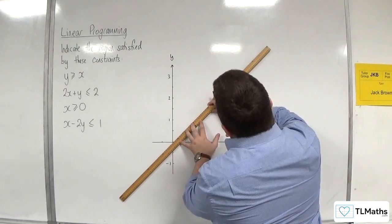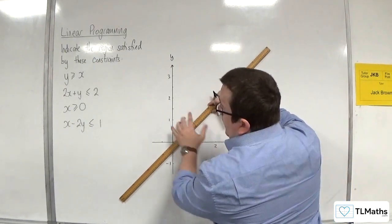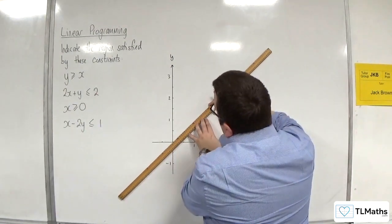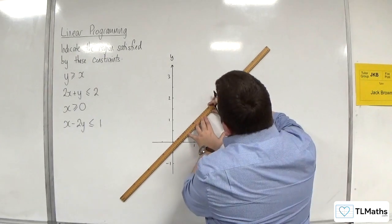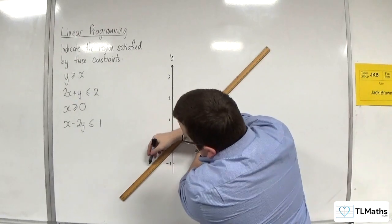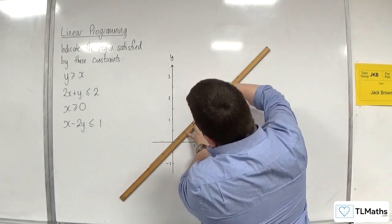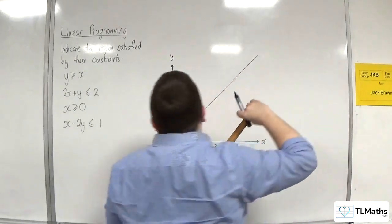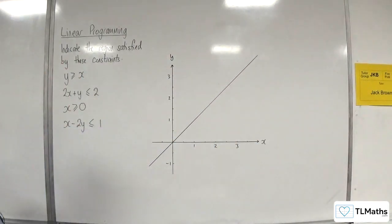So they're all greater than or equal to or less than or equal to. So they're all full lines and not dashed lines. So solid lines. OK, so there we are. There's our first one.